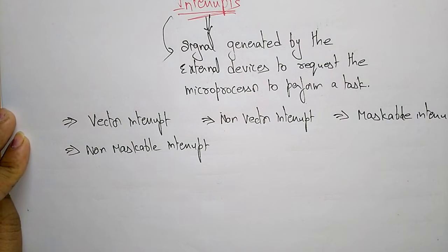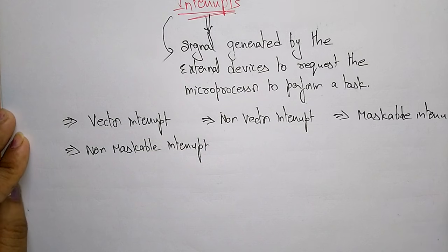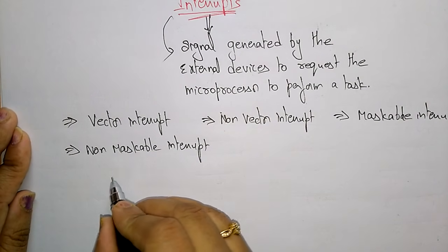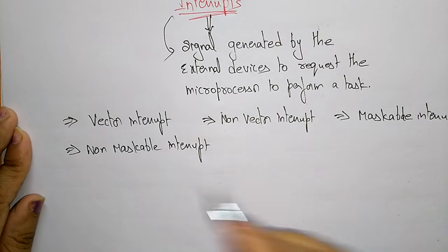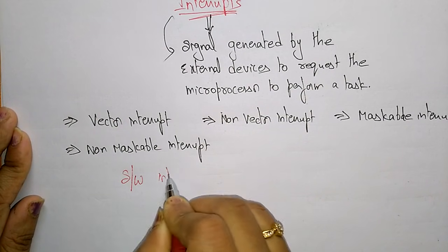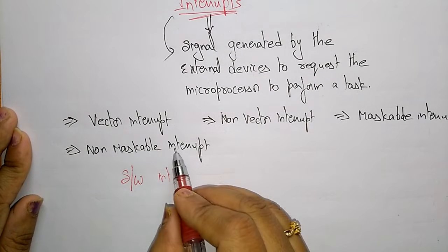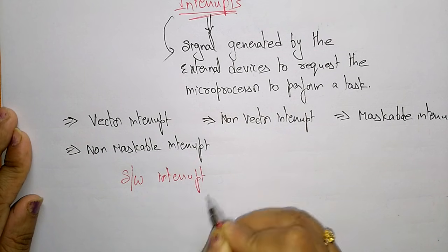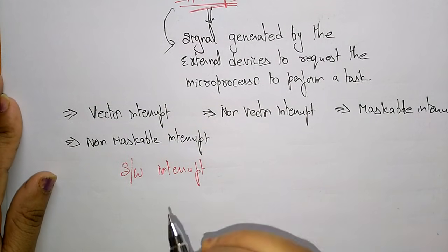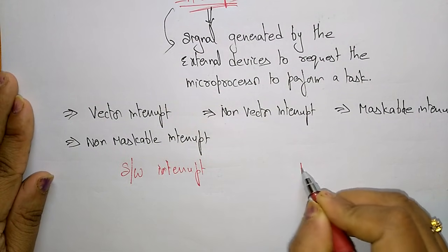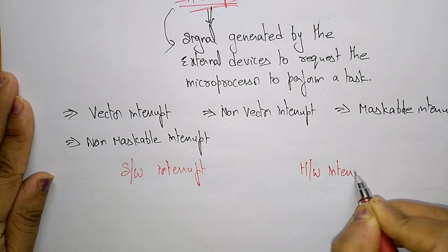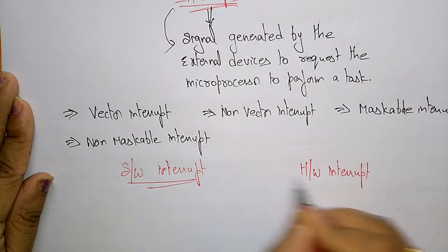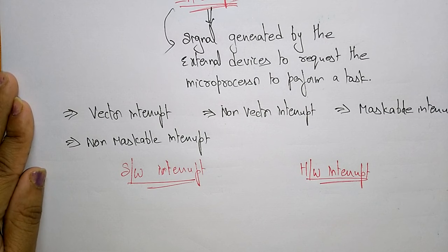The 8085 microprocessor accepts interrupts divided into two main types. Before understanding the classification, let us look at the two different interrupts accepted by the 8085 microprocessor: software interrupt and hardware interrupt.